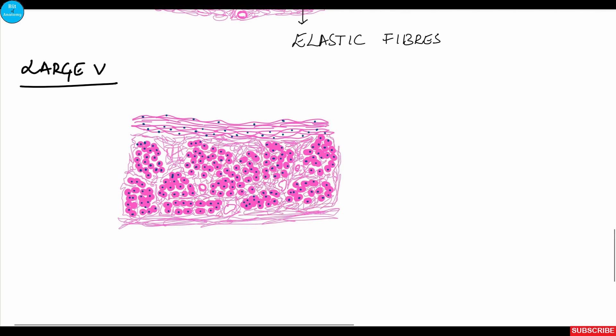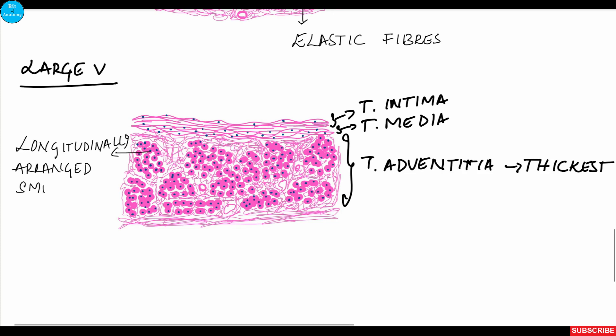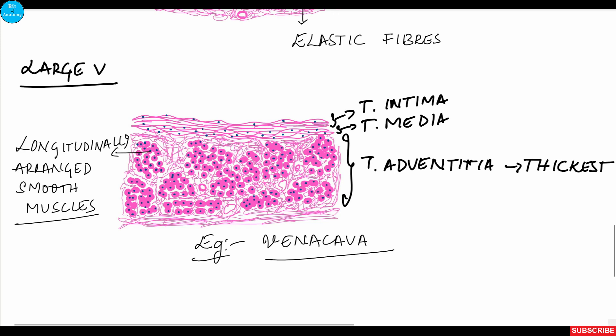The speciality of the larger vein is the presence of numerous longitudinally running bundles of smooth muscle in the tunica adventitia layer, in addition to vasa vasorum and regular connective tissue. These longitudinally arranged smooth muscle bundles, particularly in the inferior vena cava, contract to help conduct blood towards the heart against gravity. Examples include the vena cava.